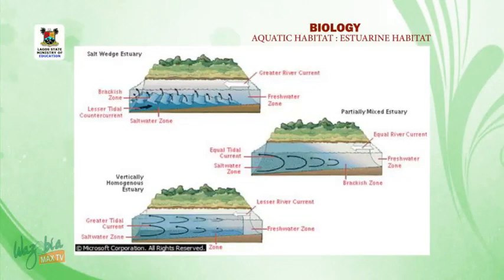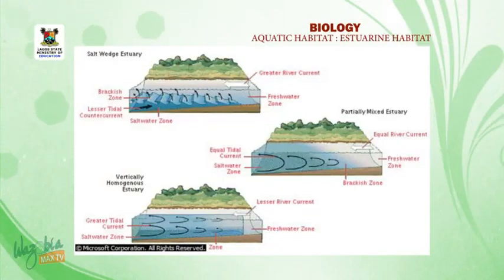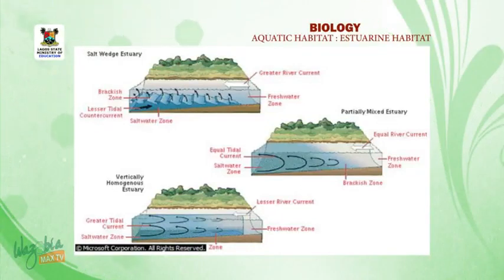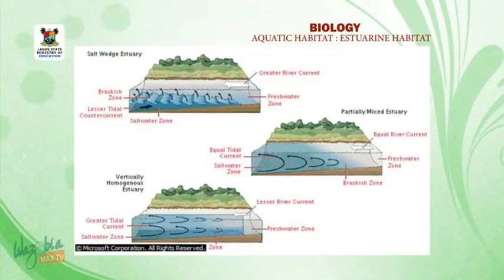Salt wedge estuaries, such as the Mississippi Delta, exist where the river current exceeds the tidal current. Equal river and tidal currents, such as those in the Chesapeake Bay, create a partially mixed estuary — the second mixing type. Where the tidal range exceeds the fresh water inflow, as in the Bay of Fundy, mixing is more complete and a vertically homogeneous estuary is created. So what creates these types depends on the tides, wind, wave motion, and river runoff.